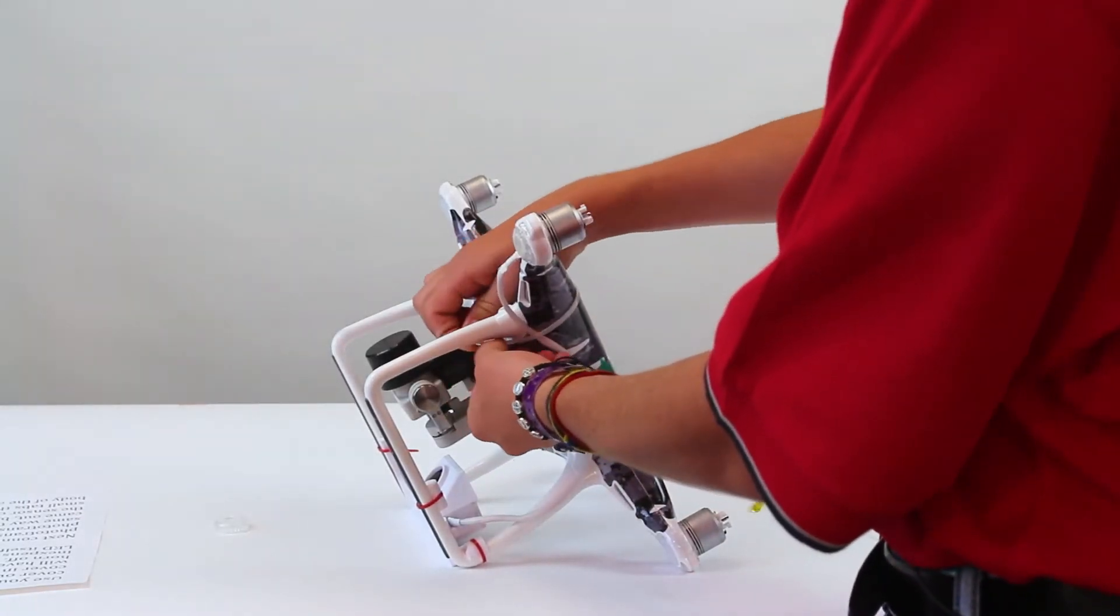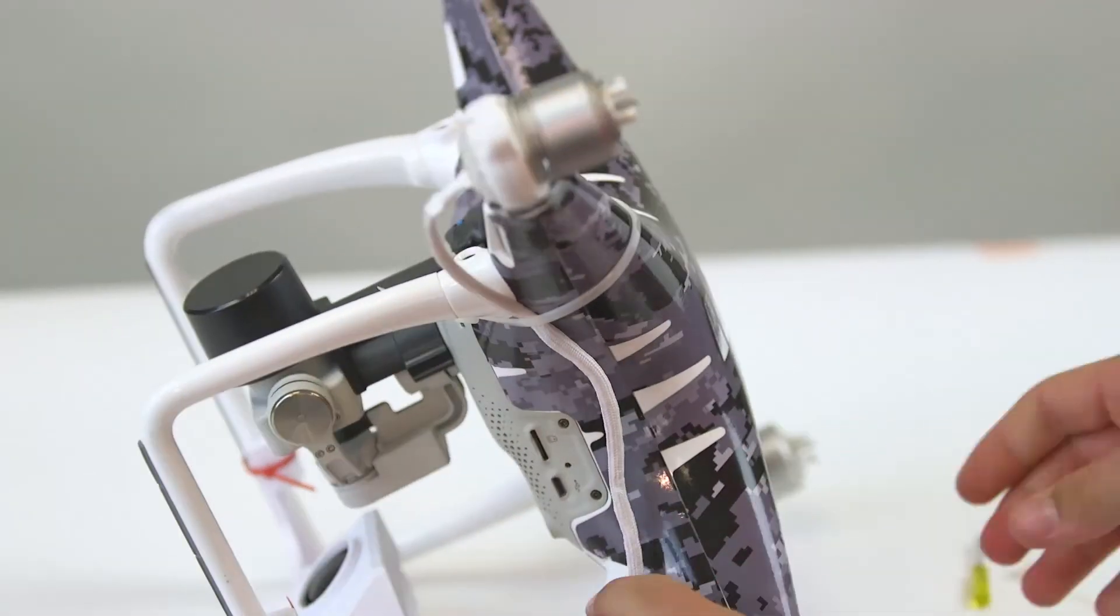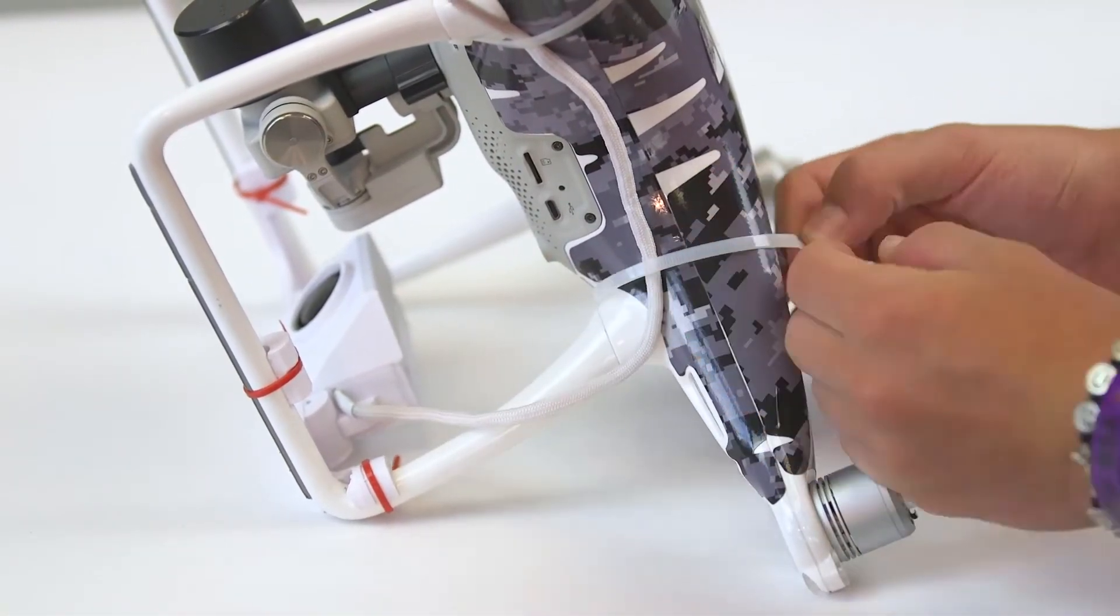Next use the longer zip ties included in the kit to secure the wire to the rotor arms. One on the front and one on the back.